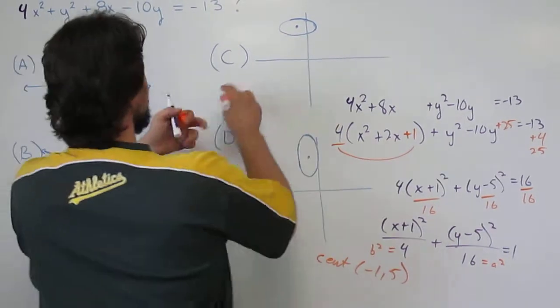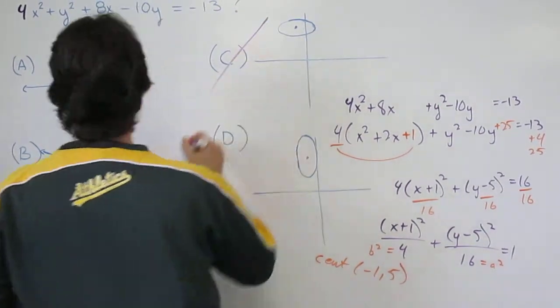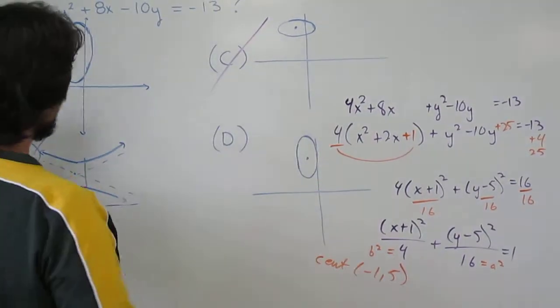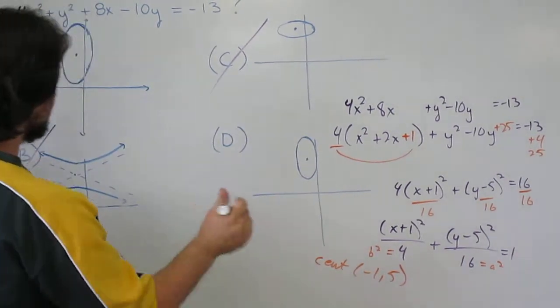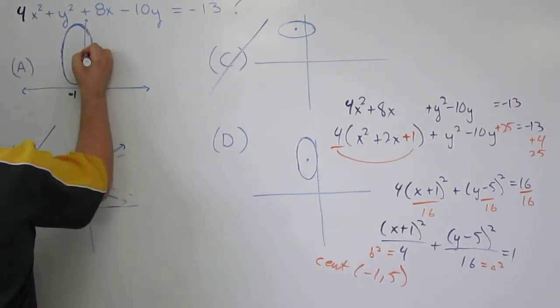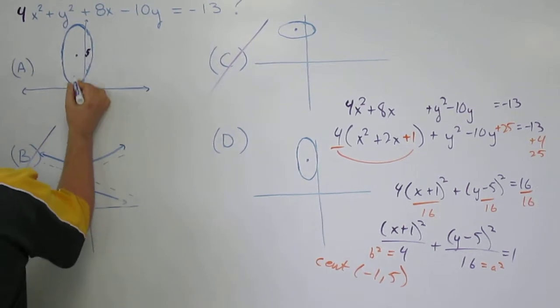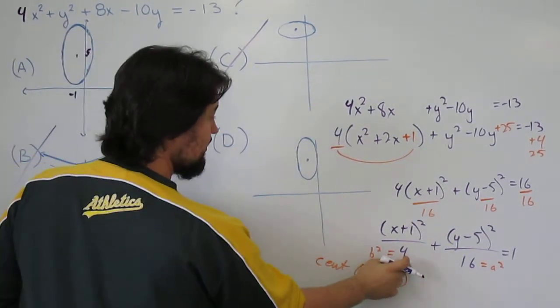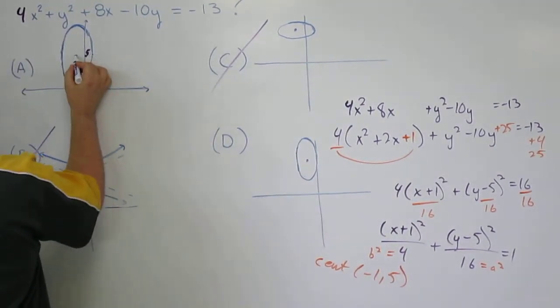So that can't be the right answer. It can't be this. It's either going to be like this or like this. Well the center was at negative 1 and up 5. That means if I moved over 2 units because b would equal 2, so I move over 2 and back 2.